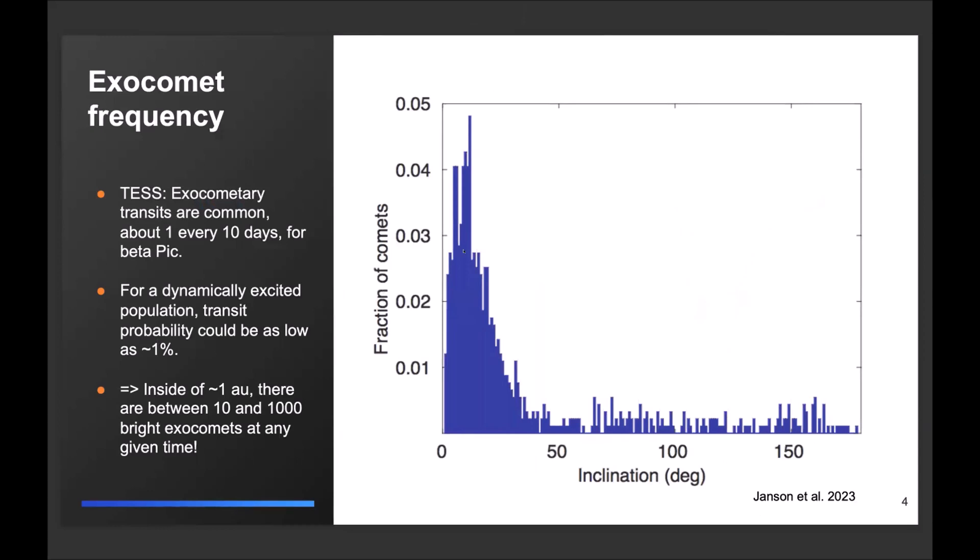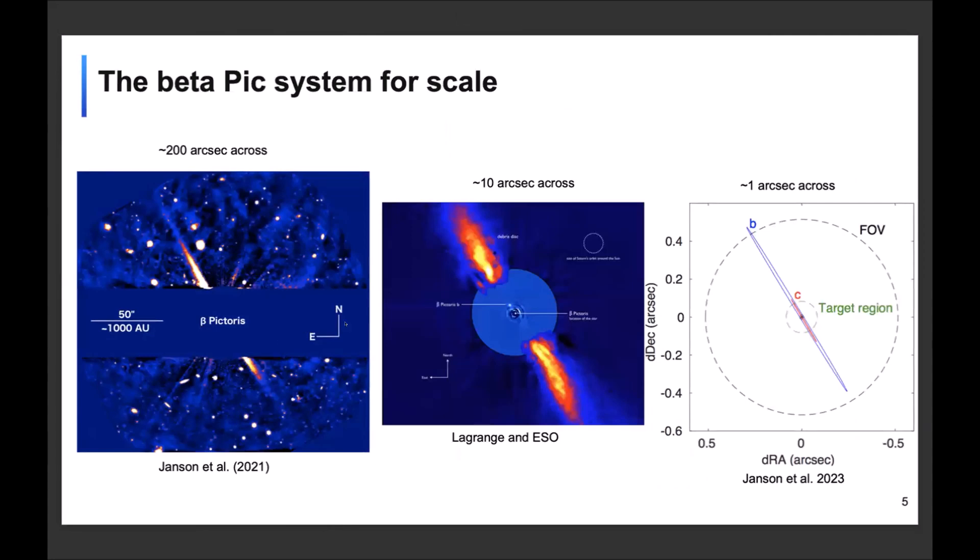And if you look at the distribution of inclinations in the solar system, which is this figure here, then it follows that it could easily be as low as a fraction of 1% or something that transits. So we're really talking about a lot of exocomets potentially here, so between 10 and 1,000, say, at any given time. That's not a good thing, by the way, as we'll return to, but it certainly shows that there are plenty of exocomets out there in some kinds of systems.